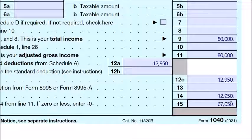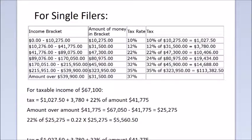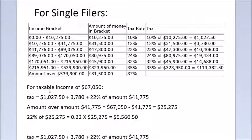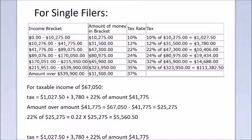Now let's find the tax for this amount. The taxable income is $67,050, so this filer will be in the $41,776 to $89,075 tax bracket. A mistake a lot of people make is thinking the tax will be 22% of $67,050, but that's not the case.